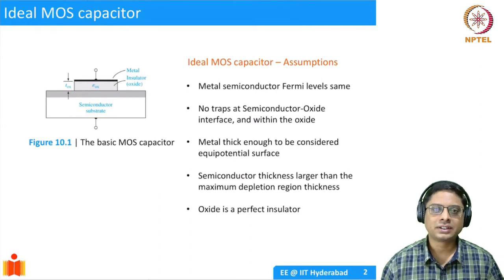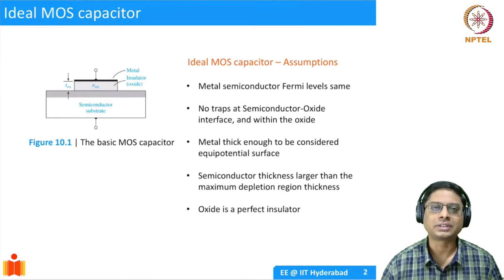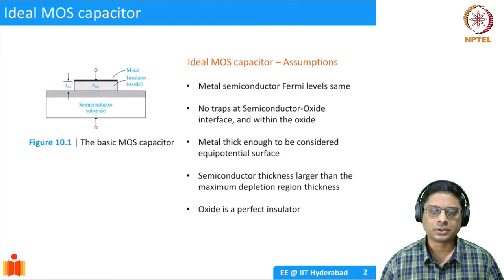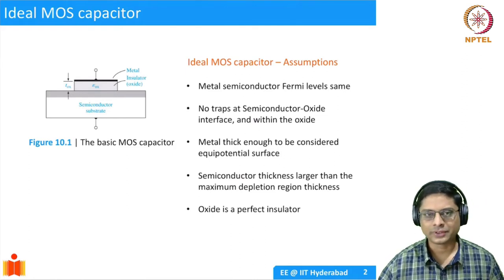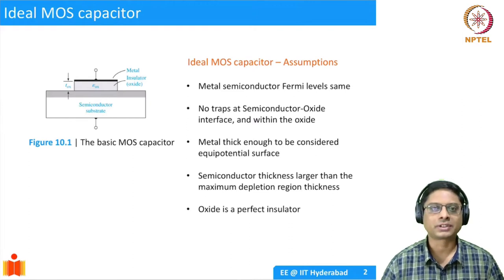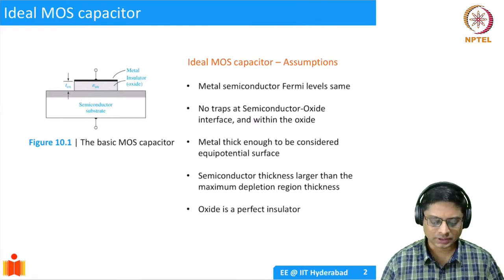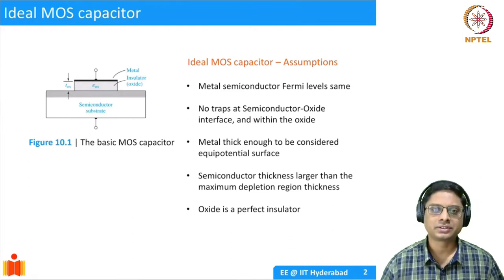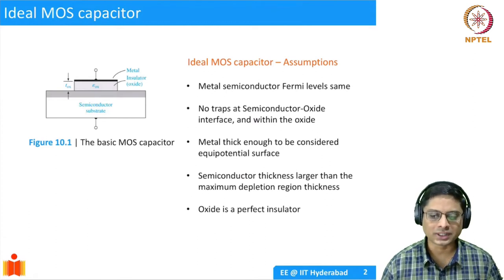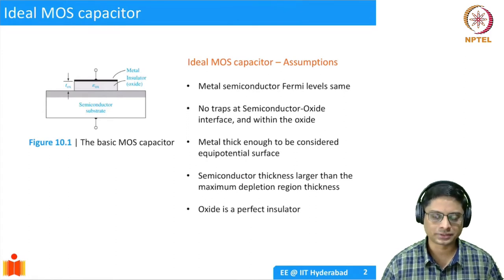A MOS capacitor is the heart of a modern MOSFET. It is still a two-terminal device — the actual MOSFET will be four-terminal, which we will discuss after finishing with the MOS capacitor. But this two-terminal device gives you the necessary tools to understand the operation of a MOSFET while being simple enough.